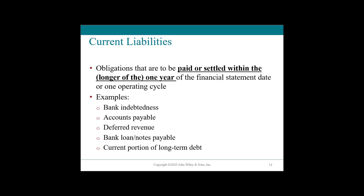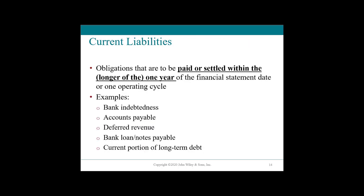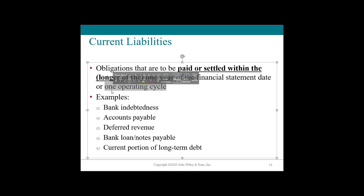Current liabilities. If you recall from the beginning of the second video, we worked through current assets all the way down to non-current assets. Now we have the other half of the accounting equation: liabilities and shareholders' equity. Current liabilities are obligations — something that we owe that we intend or need to settle within the next year, or one operating cycle.